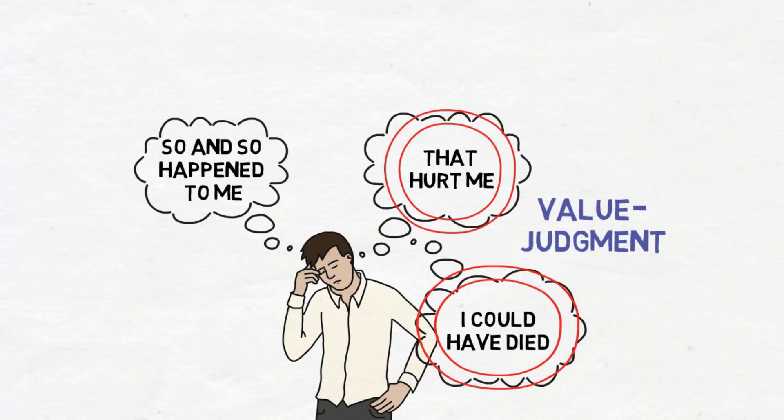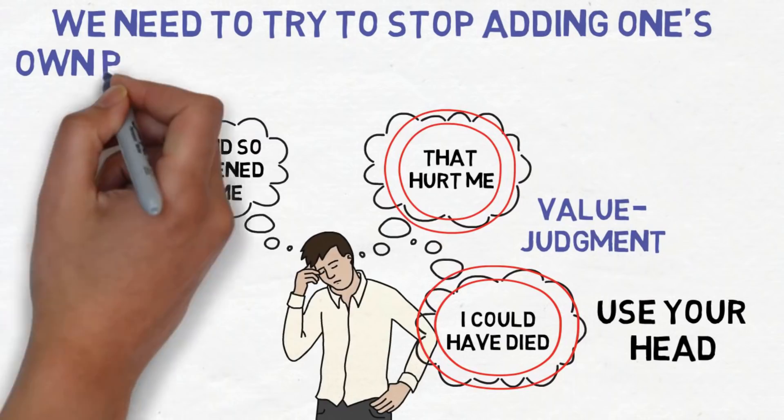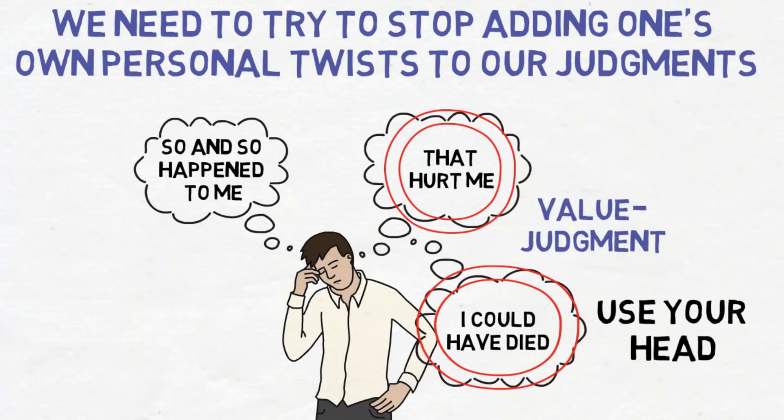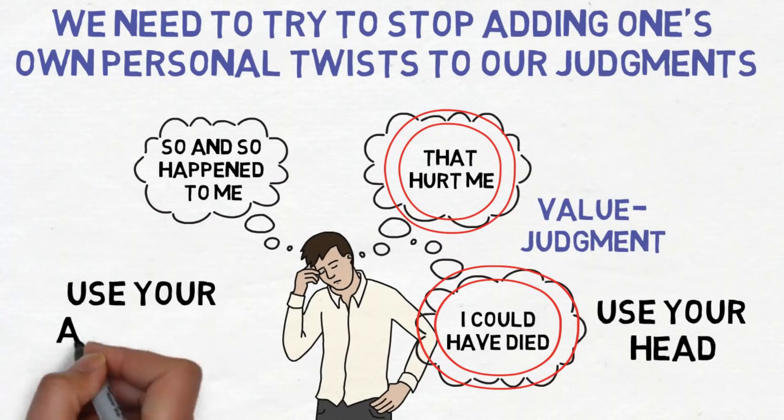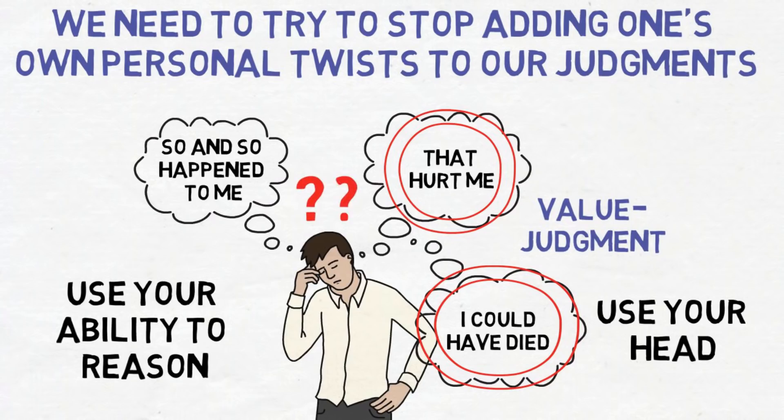For the Stoics, the biggest part of living according to nature was using your head. We need to try to stop adding our own personal twists to our judgments and instead use rational thinking and our ability to reason in order to grant or deny assent to those impressions. So how do we reason and make correct judgments? We do this by following what the ancient Stoics did 2000 years ago, which was using their ability to reason.